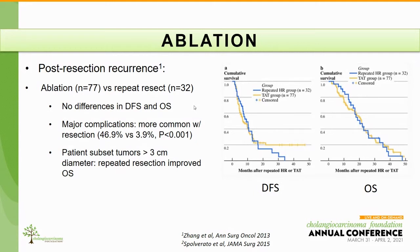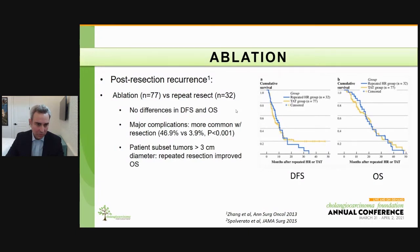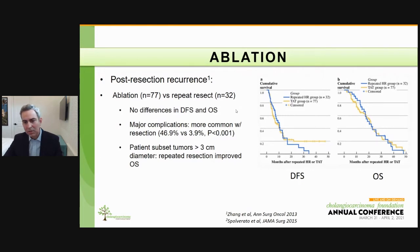Regarding data, post-resection recurrence is the main clinical situation where we see literature on ablation. This is a paper published by Zeng in 2013 comparing 77 patients who underwent ablation after post-resection recurrence versus 32 patients who had repeated resection. This retrospective analysis showed no difference in disease-free or overall survival. Overall survival for the resection group was 20.3 months versus 21.3 months for the ablation group — not a significant difference. Major complications were significantly lower in the ablation group.